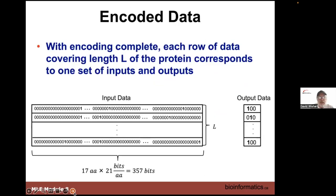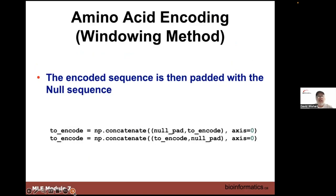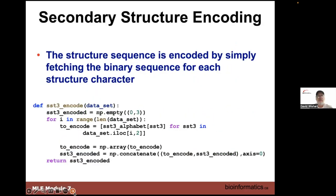Once we've done the encoding, we have this length of inputs and then the output schematically illustrated on the right — lots of zeros and very few ones. The code that implements this in Python uses a window size of 17 (which can vary), concatenates nulls to the beginning and end, and produces a flattened array of 357 values. For the secondary structure, we convert the H, B, and C characters to the appropriate zero-one-zero combinations.